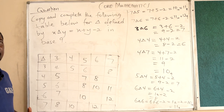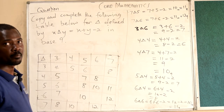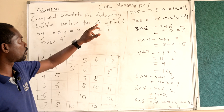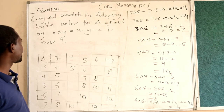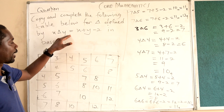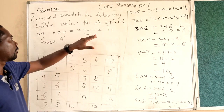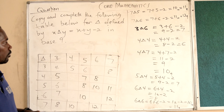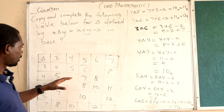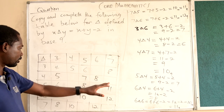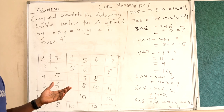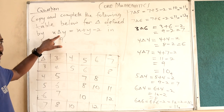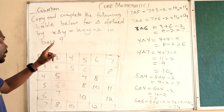Let us try to solve the question on the board. Copy and complete the following table for the operation triangle defined by x triangle y equals x plus y minus 2 in base 9. The table has been given and there are some holes that we need to fill. They have already defined the operation triangle for us.